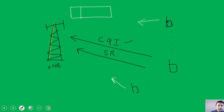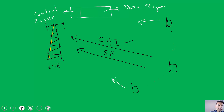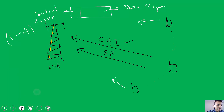In each subframe there are 14 OFDM symbols, assuming normal cyclic prefix. There is a control region and a data region in each subframe. In case of congestion — meaning many users are requesting resources — the control region can have anywhere between 1 to 4 OFDM symbols. If more users need to be scheduled, recommendations say you can have two or three OFDM symbols dedicated for the control region.